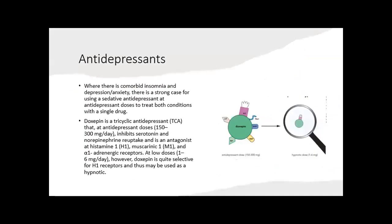Antidepressants. When there is comorbid insomnia and depression or anxiety, there is a strong case for using sedative antidepressants at antidepressant doses to treat both conditions with a single drug. Doxepin is a tricyclic antidepressant that at antidepressant doses of 150–300 mg per day inhibits serotonin and norepinephrine reuptake and is an antagonist at H1, M1, and alpha-1 adrenergic receptors. At low doses of 1–6 mg per day, doxepin is quite selective for H1 receptors and may be used as a hypnotic.